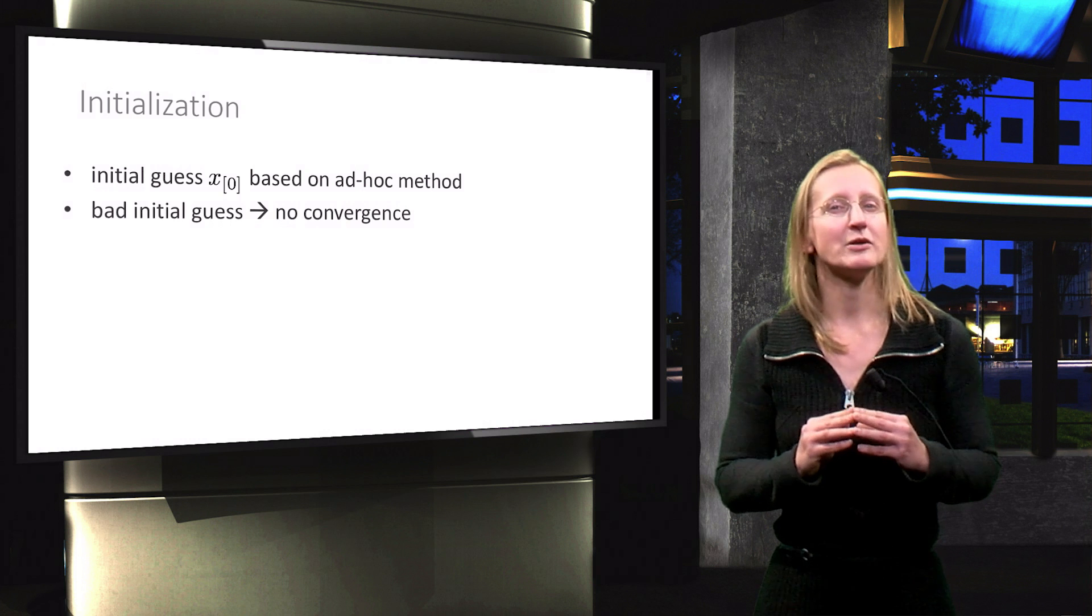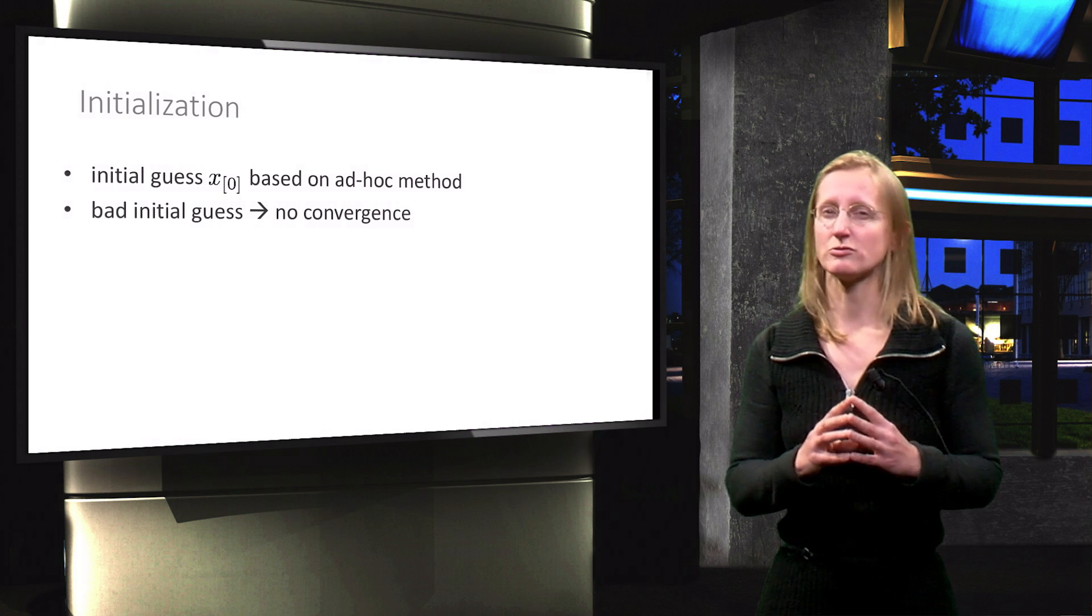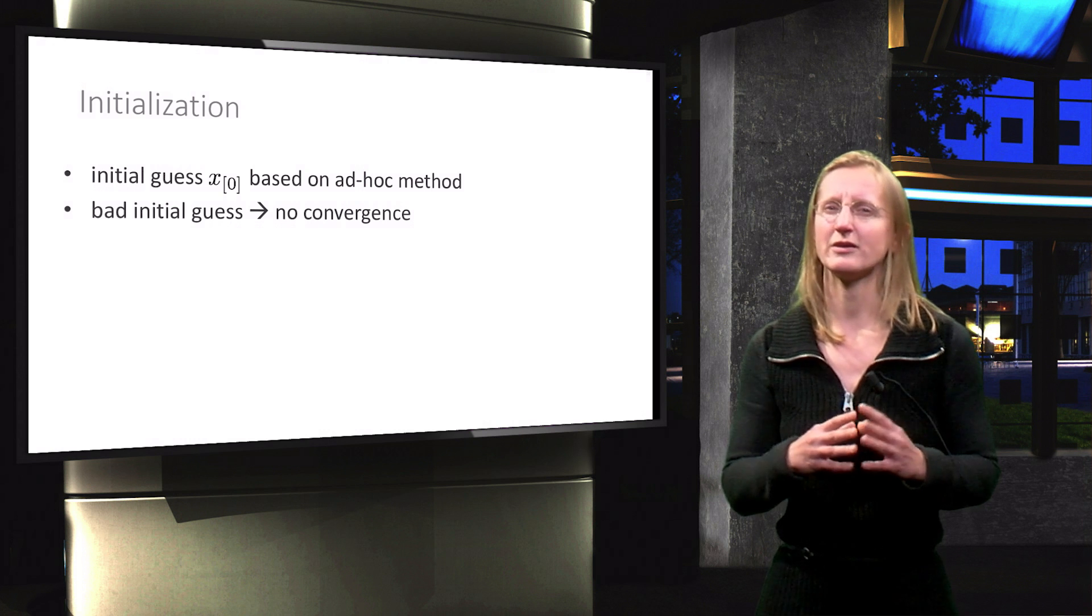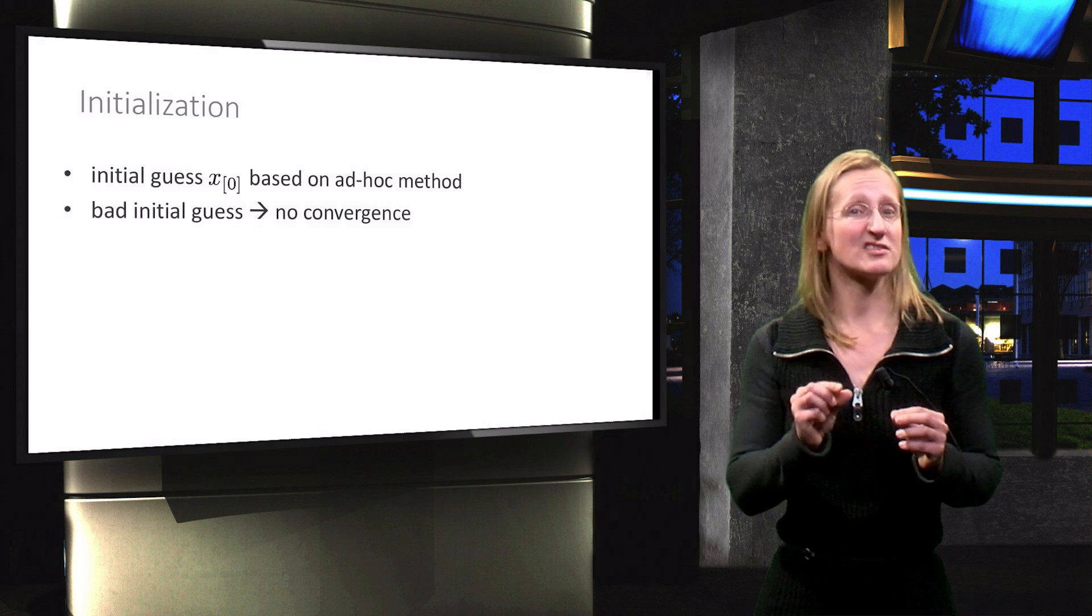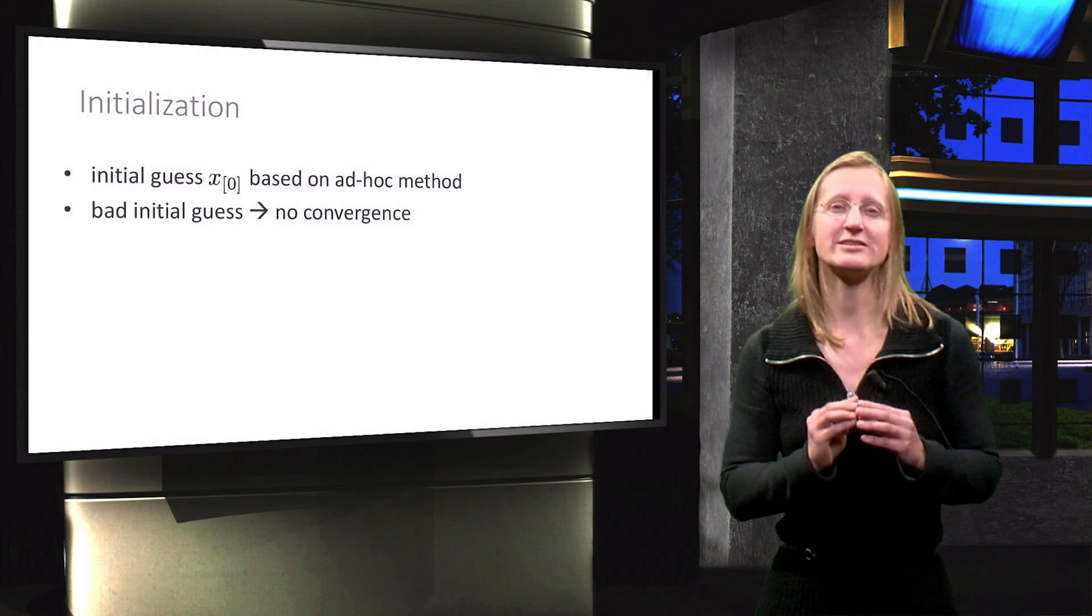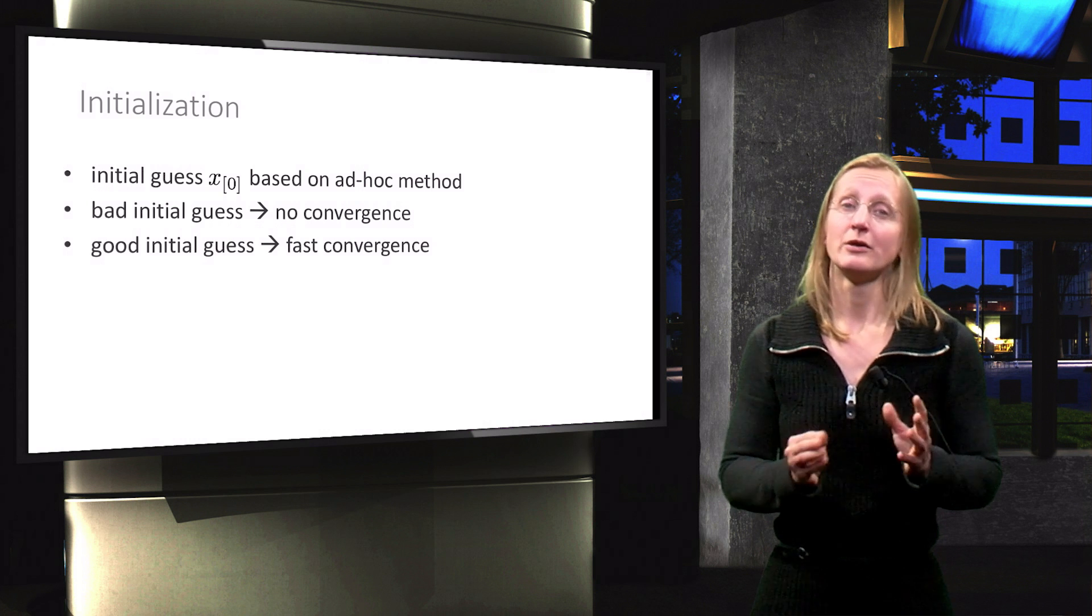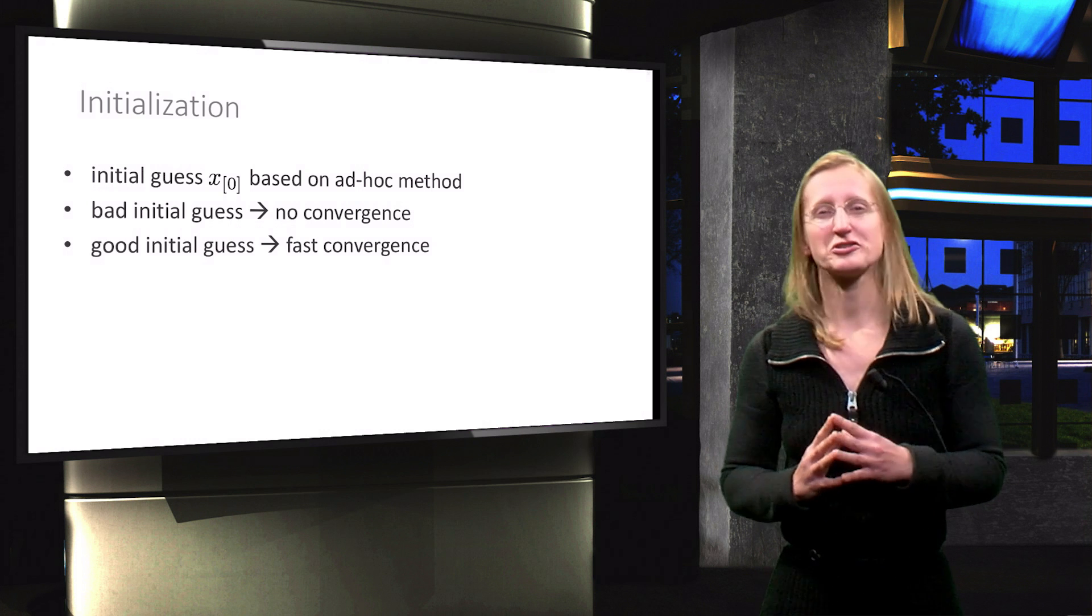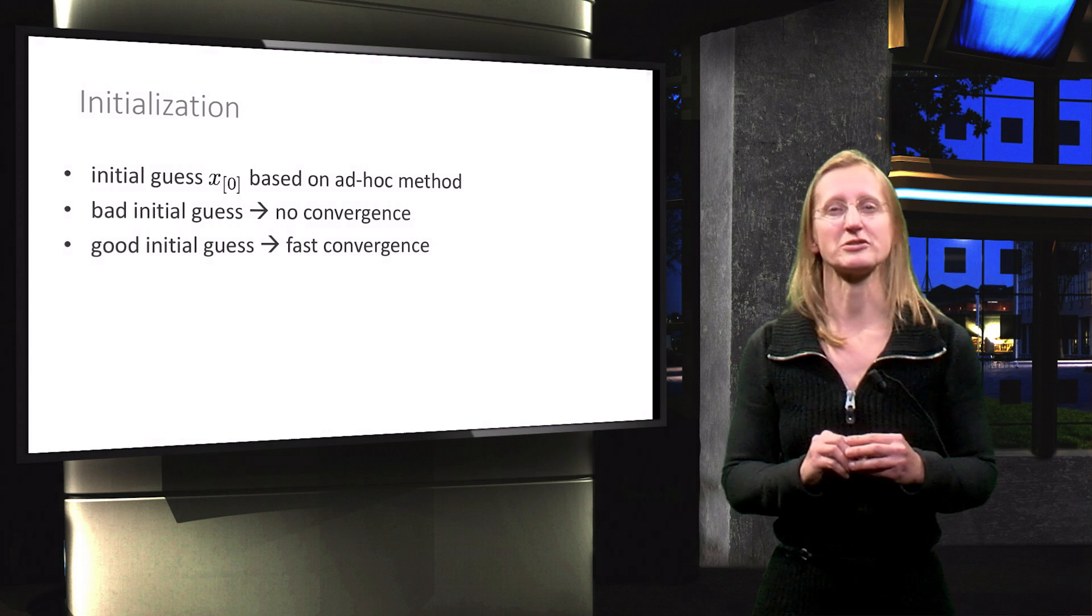At the same time, a bad initial guess may have as a result that the solution does not converge. In other words, the delta x does not become smaller and smaller while iterating. Conversely, if you have a good initial guess, the solution may converge in only a few iterations.